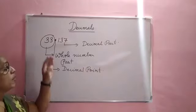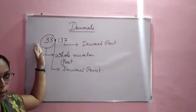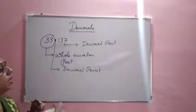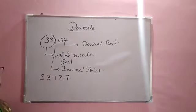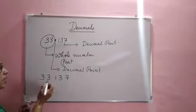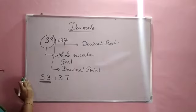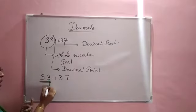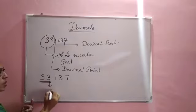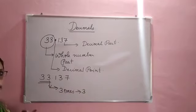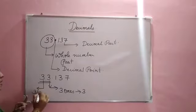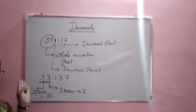So a decimal number has two parts. The part before the decimal point is known as the whole number part, and the part after the decimal point is known as the decimal part. Now let's look at the place value. Before the decimal point, the place value works just as it does for normal numbers — this is the 1's place, so the place value of 3 is 3, and the other 3 is 30.